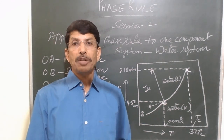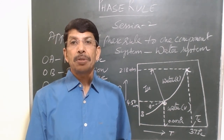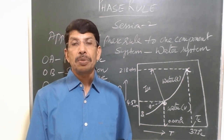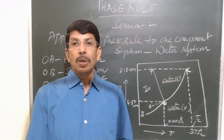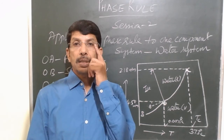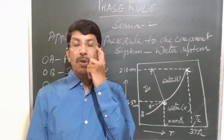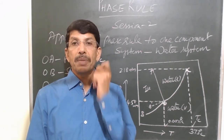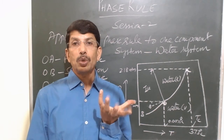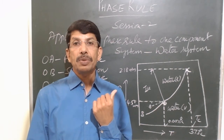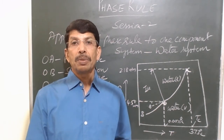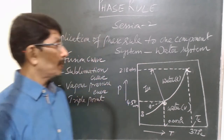We also learned that Gibbs' phase rule is flawless and has no limitations. Depending upon the number of components, we have one-component or two-component systems, and today we will be discussing about the one-component system.